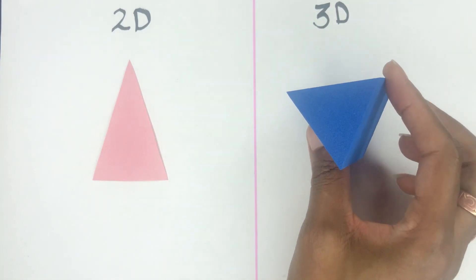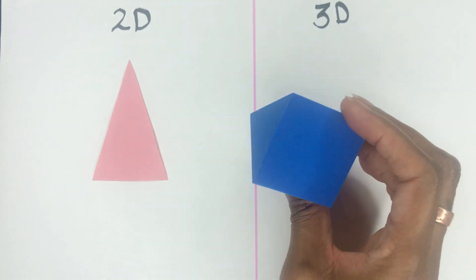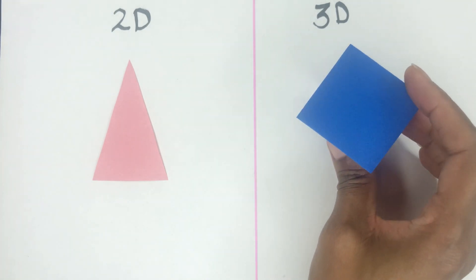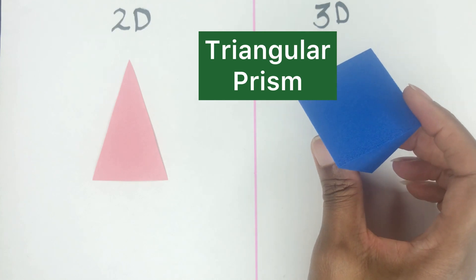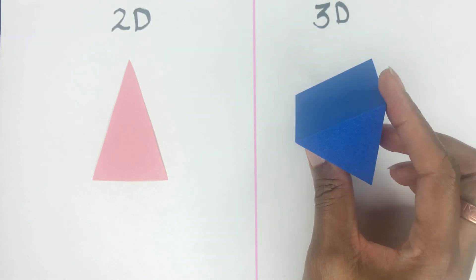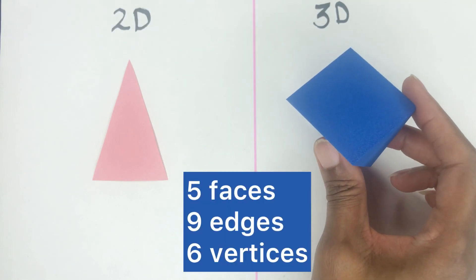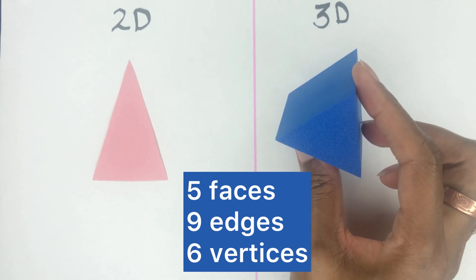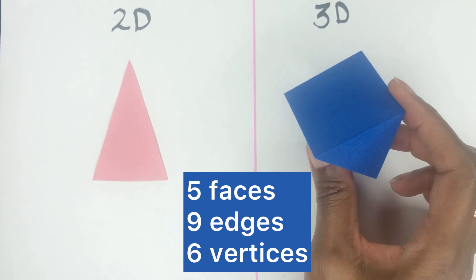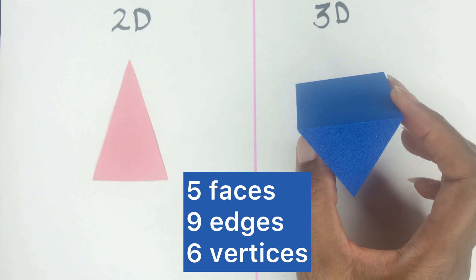With triangles, we also have a triangle in 2D, and in three-dimensional it's called a triangular prism. What are the properties of that? It has five faces, nine edges, and six vertices.